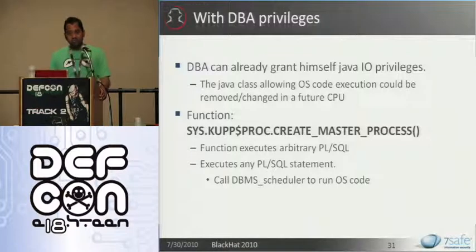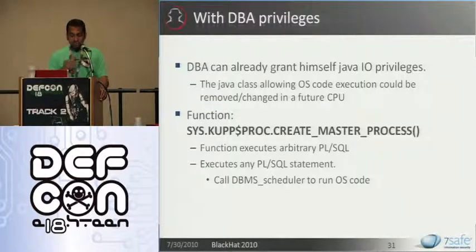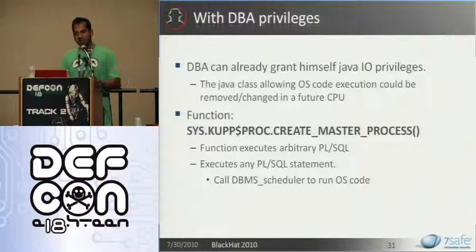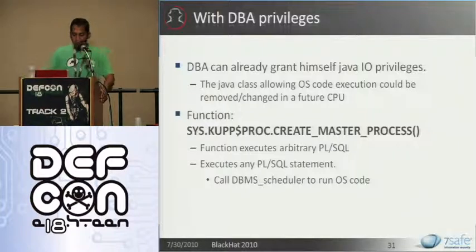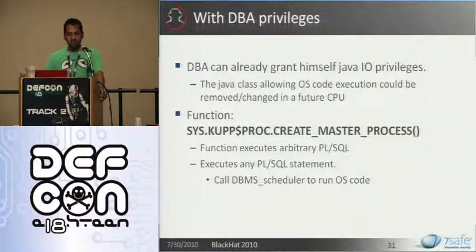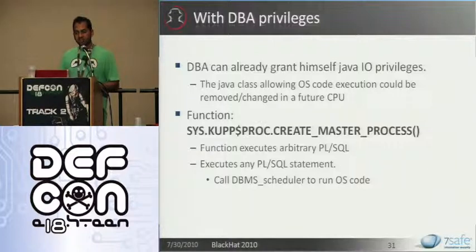You can also execute code with DBA privileges. DBA can grant himself Java IO permissions and go back to that step to execute OS code. But I wanted something generic — even if in future Oracle removes this Java class or revokes execute permissions from public, we still want to execute OS code. In Oracle 10G and 11G there is a function called create master process which executes arbitrary PLSQL. This is a feature, not a flaw. Because it executes PLSQL as a feature, we pass as an argument PLSQL which is a DBMS scheduler, and via DBMS scheduler we can execute OS code. It creates a program telling Oracle to run particular OS code with particular arguments, then creates a job, executes the job, and drops the job.